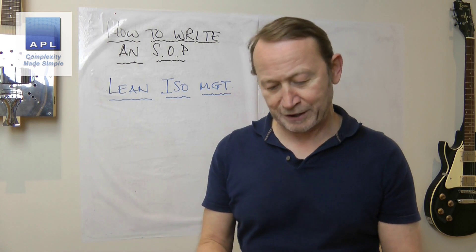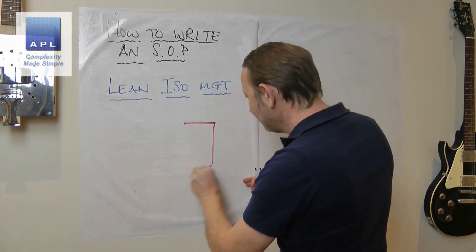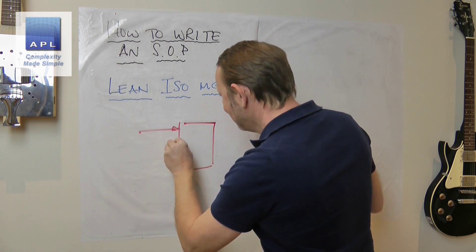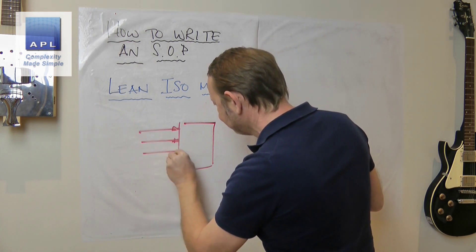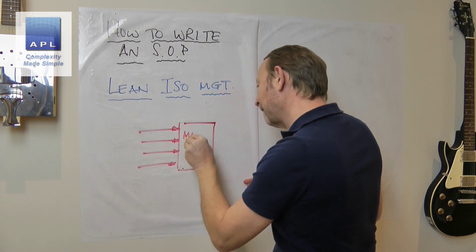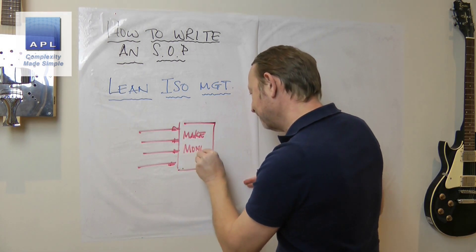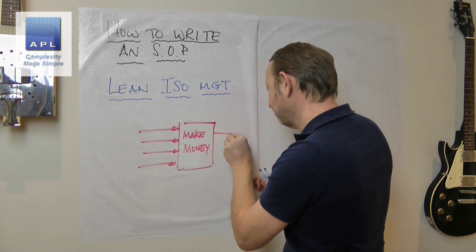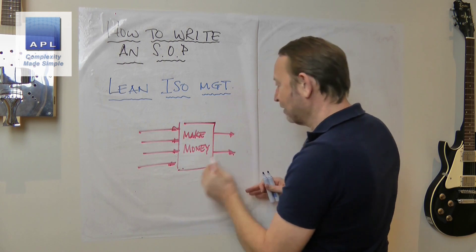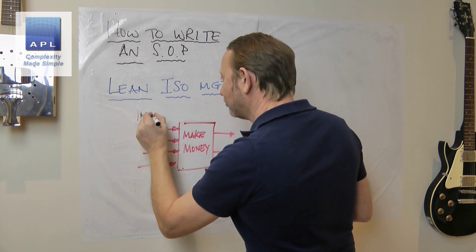When I started reading it, it just reminded me of advice that I give to my clients about how to write a good standard operating procedure. So what I'm going to remind you of again and again is this diagram. You have a money-making process.